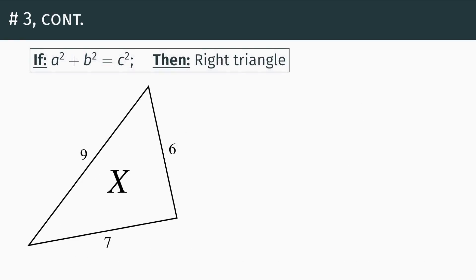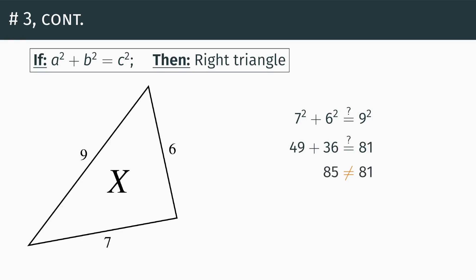Let's approach triangle X first. If a squared plus b squared equals c squared, then we're looking at a right triangle. We identify the longest side — 9 is the biggest, so c equals 9. We set up: 7 squared plus 6 squared equal to 9 squared? Note the question mark over the equal sign — we're trying to evaluate if the left side equals the right side. Seven squared gets us 49, six squared gets us 36, nine squared gets us 81. Is 49 plus 36 equal to 81? We add 49 and 36 and get 85. 85 is definitely not 81, so X is not a right triangle.